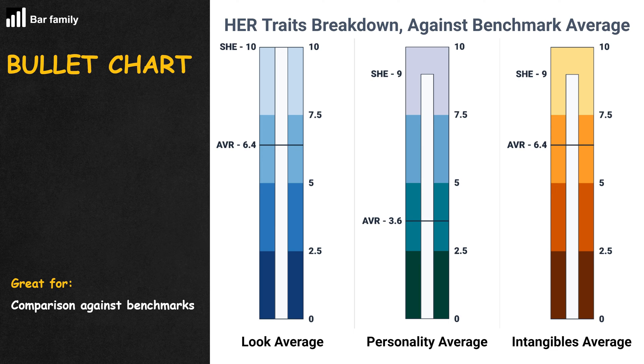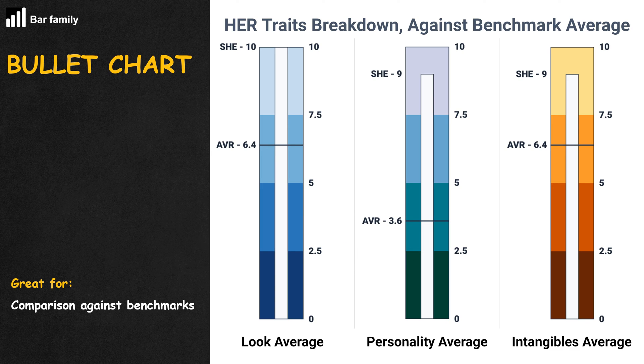The range is represented by an outer stacked bar or column, with the actual subject data represented by the inner bar or column, creating a bullet shape.